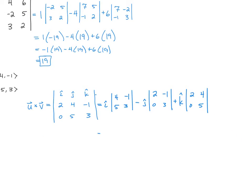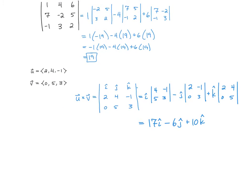So then when we do this, do the second order determinants, we're going to have 12 plus 5, so we have 17i, 6 minus 0, so minus 6j, and 10, plus 10k.